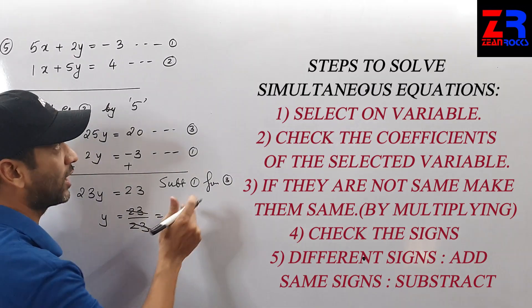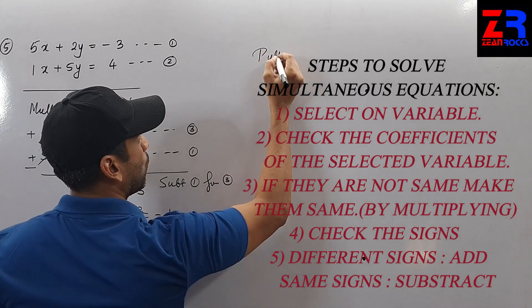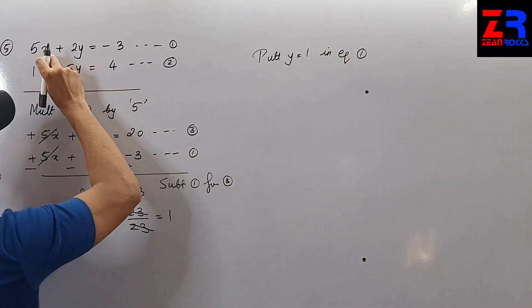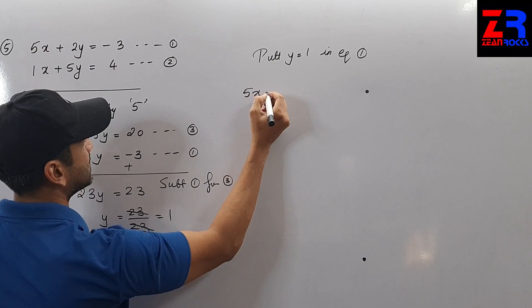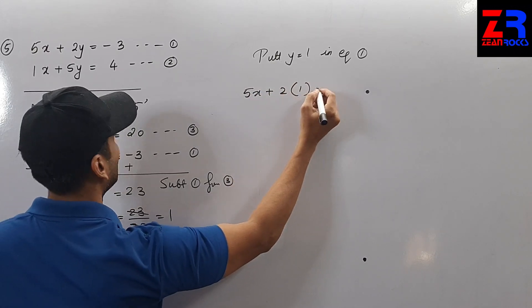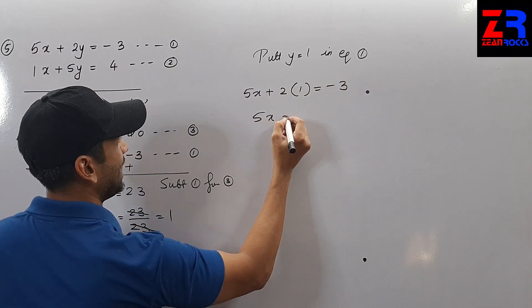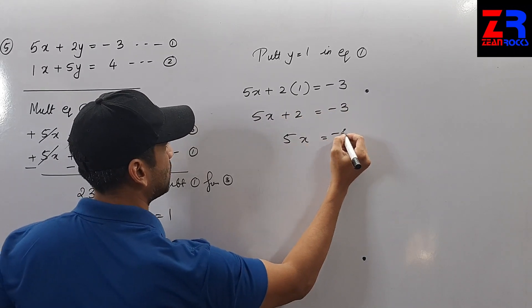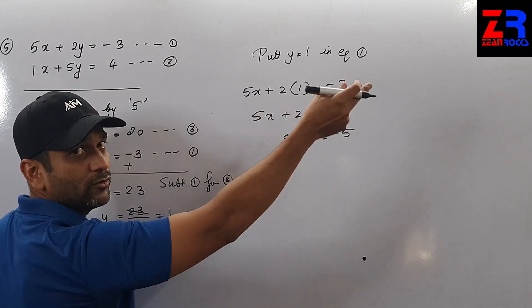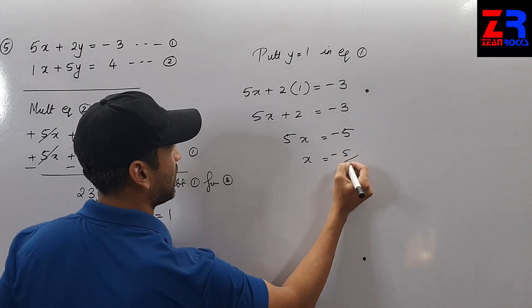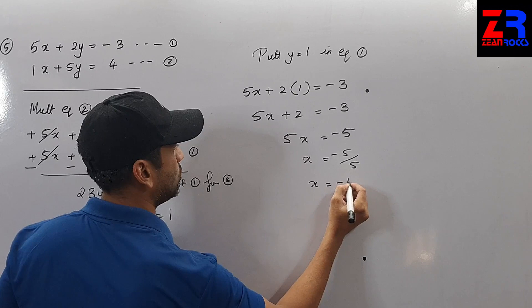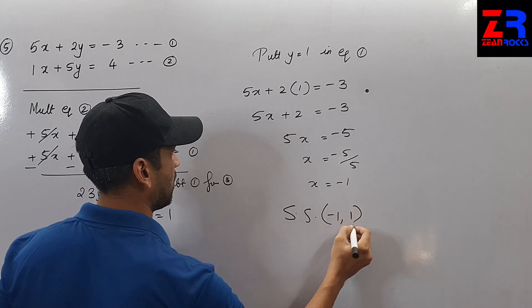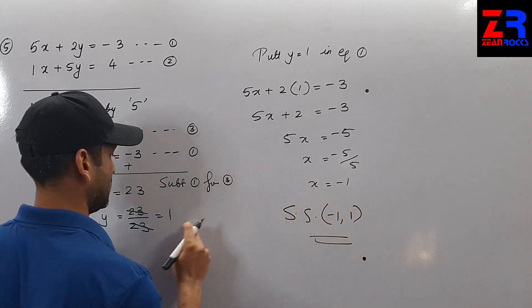I have got y = 1. Putting y = 1 in equation 1: 5x + 2(1) = −3, so 5x + 2 = −3, therefore 5x = −5, and x = −1. The solution set is (−1, 1).